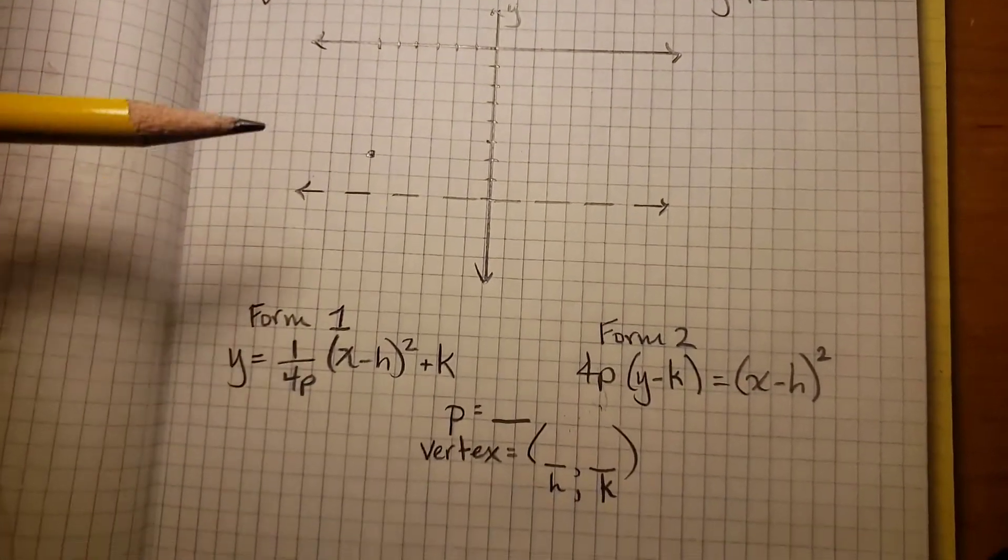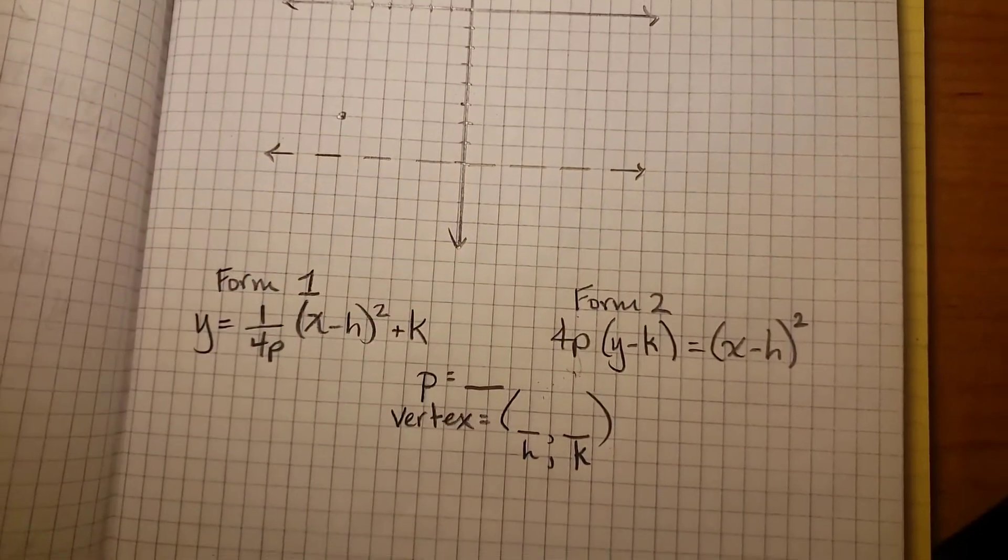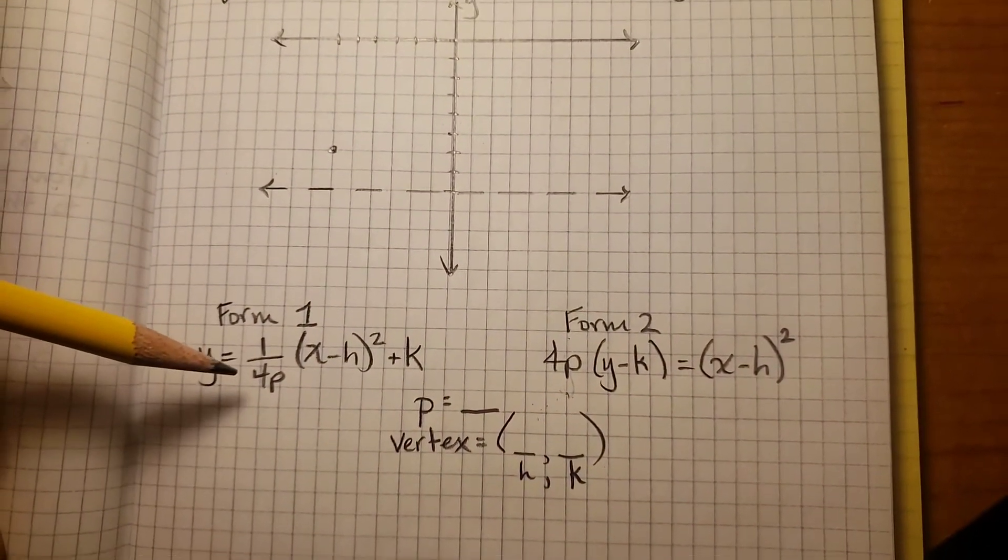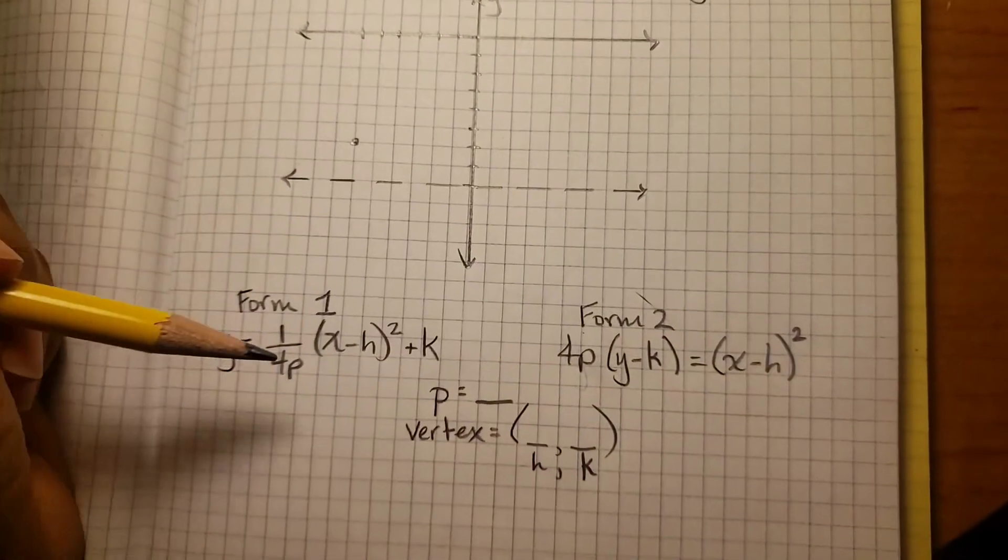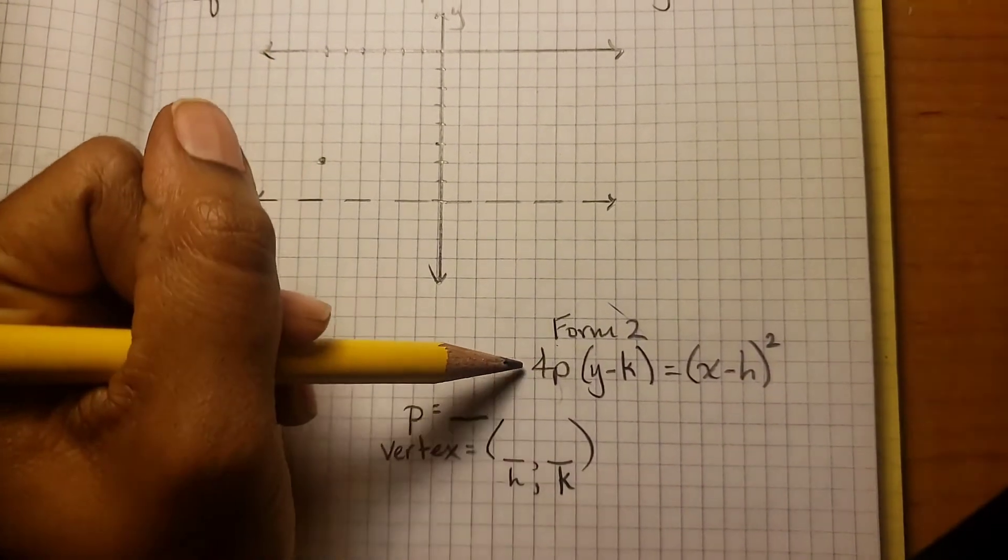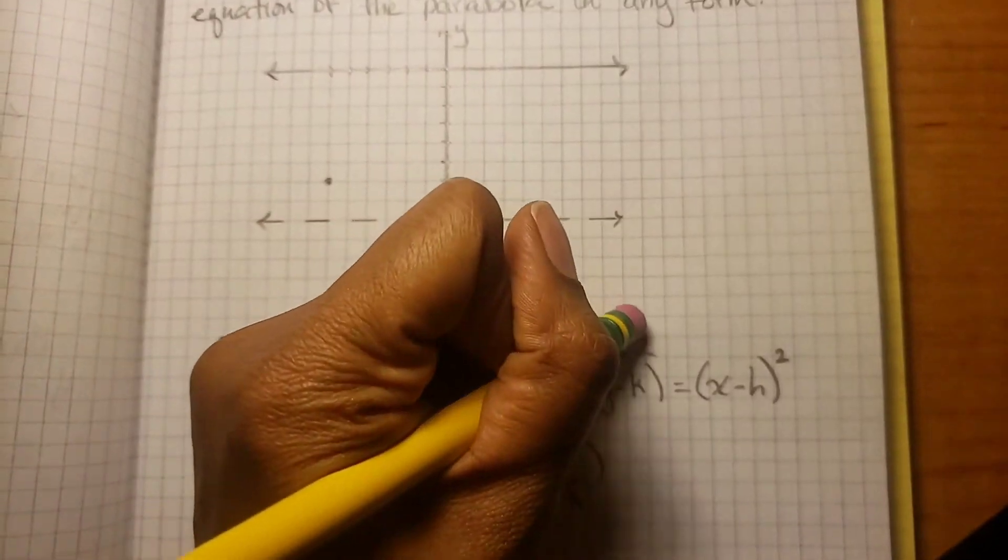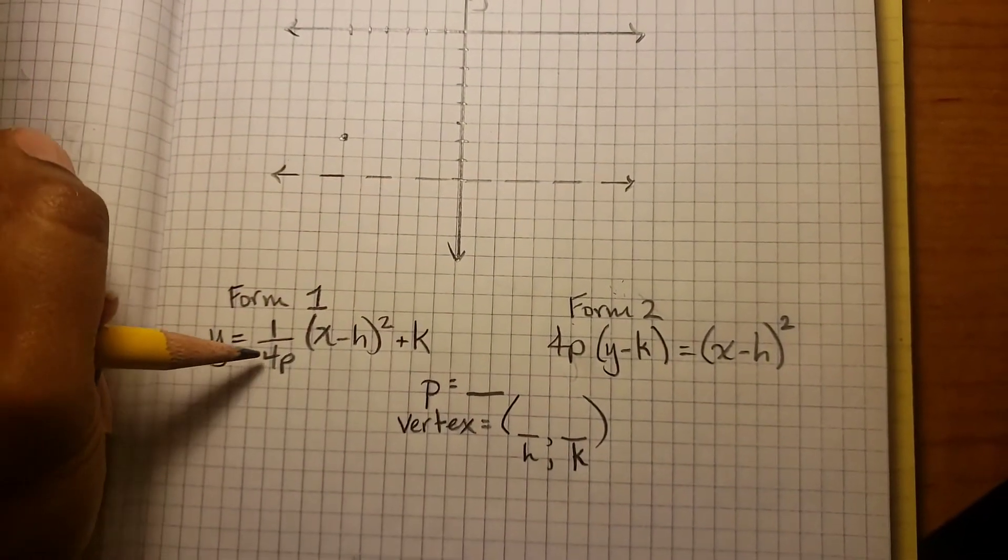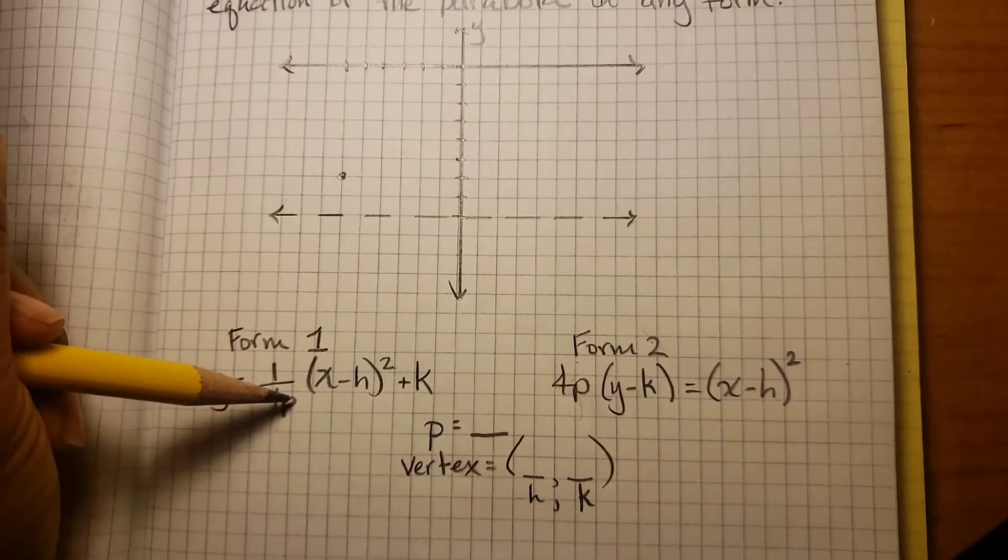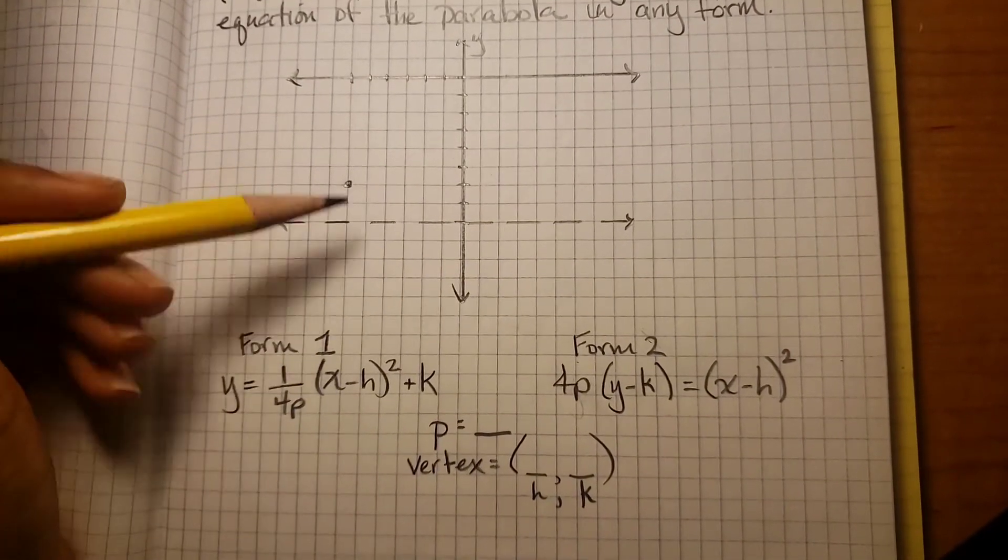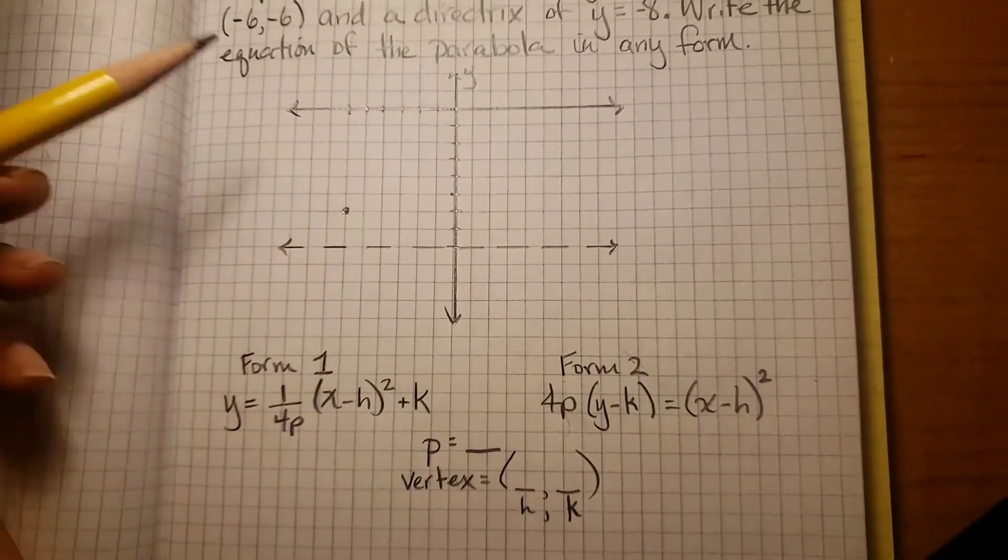They're saying any form because you have two different forms you could write the parabola in. Delta Math tells you a negative under here and a negative here, but you can always just use this form. I like this form where the p is determined by the direction that you go. Let me show you.